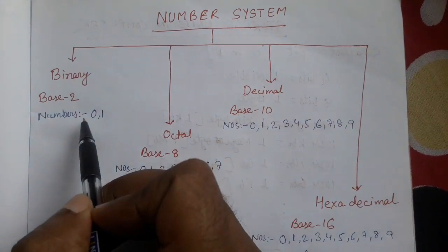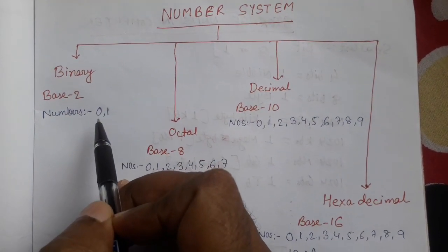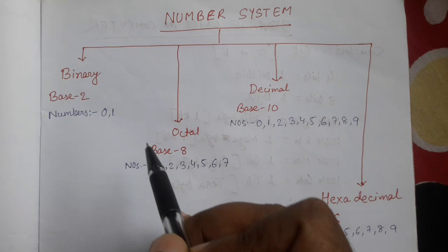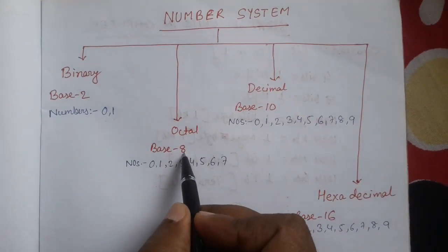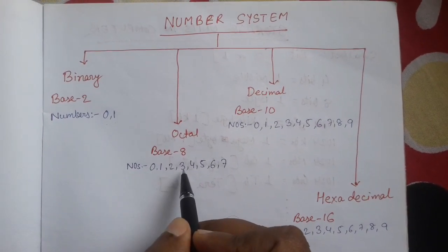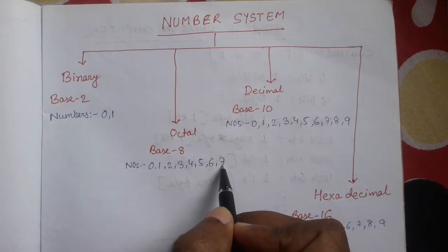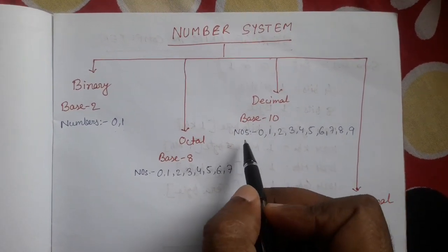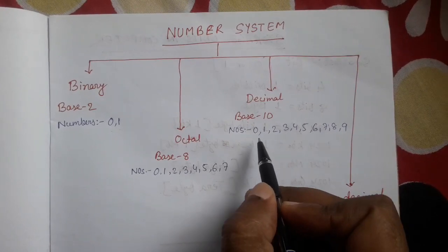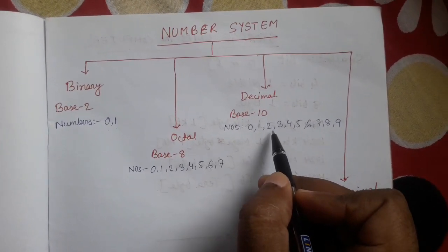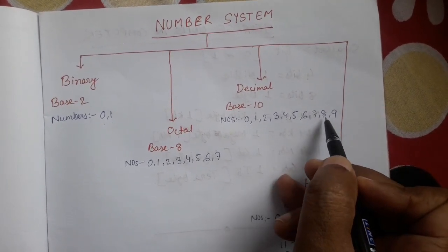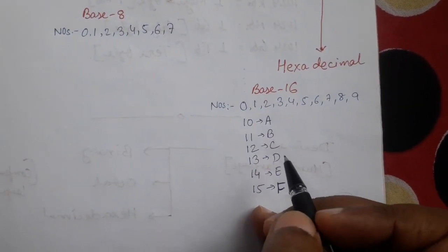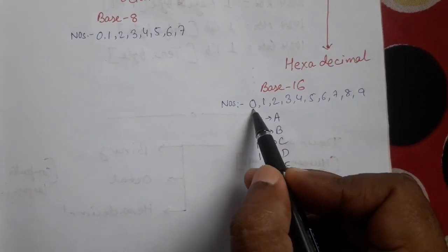In binary number system, we are having only two different values, that is 0 or 1. In octal number system, we are having 8 values: 0, 1, 2, 3, 4, 5, 6, 7. In decimal number system, base is 10, we are having 10 numbers: 0, 1, 2, 3, 4, 5, 6, 7, 8, 9. And in hexadecimal number system, we are having 16 values starting from 0.